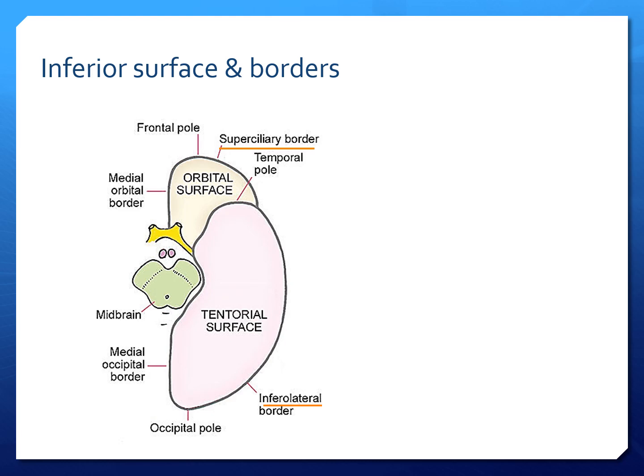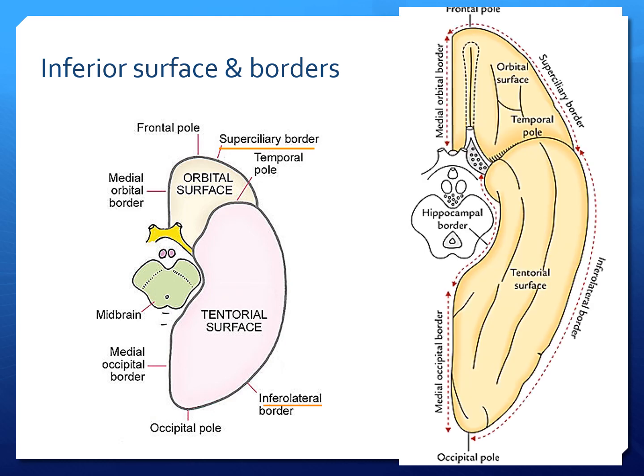The inferior surface and the borders. We can see from this picture there is a border marked as superciliary border. It extends from the frontal pole up to the temporal pole, shown in the second picture on the right-hand side of the slide with the dotted lines. There is an inferolateral border that extends from the temporal pole to the occipital pole, also shown with the dotted line. Along the medial side we have the medial orbital border, hippocampal border and the medial occipital border.